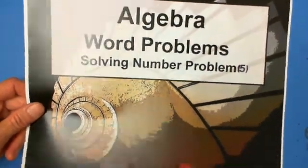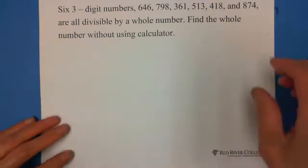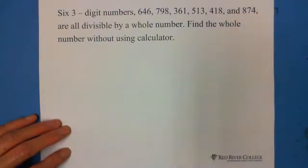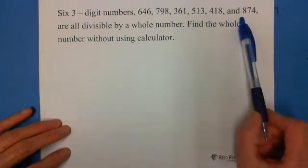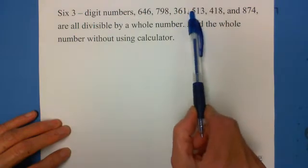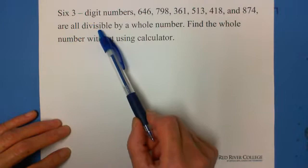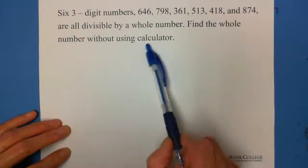The information given is there are six three-digit numbers: 646, 798, 361, 513, 418, and 874. All these three-digit numbers are divisible by a whole number. Find the whole number without using a calculator.